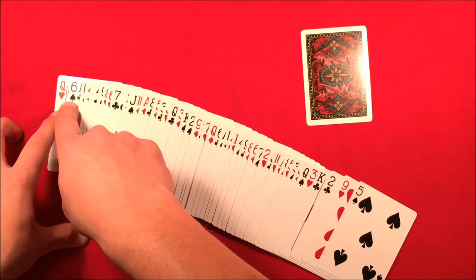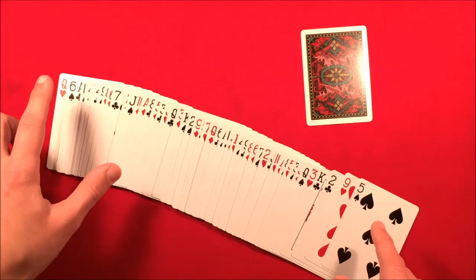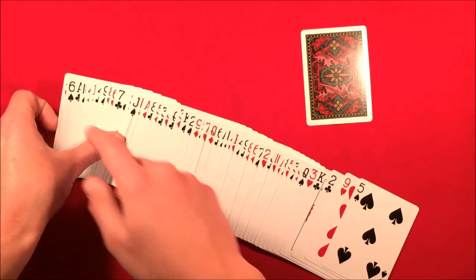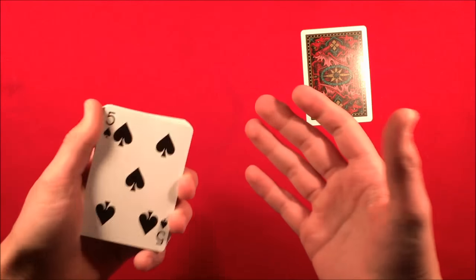reason why you line up the deck in the beginning in the same order with the soulmates is because you're looking for now the queen of hearts and the five of spades. So you're going to go through the deck and you're going to be looking for the soulmates of these two cards. So in this case, we're looking for the queen of diamonds